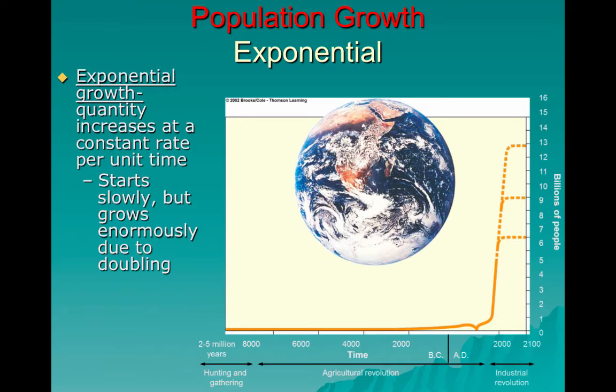Exponential growth is the type of thing that starts slowly but grows enormously, because you double your numbers every certain number of years. It can kind of sneak up on you. That's one of the things that makes exponential growth particularly concerning when talking about populations — you turn around and all of a sudden you've got twice as many people as you had not too long ago.